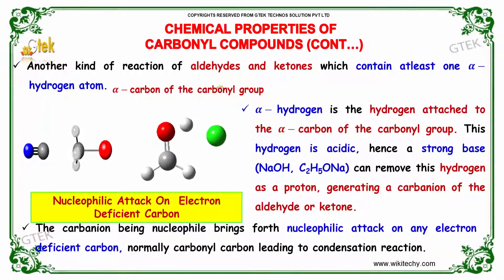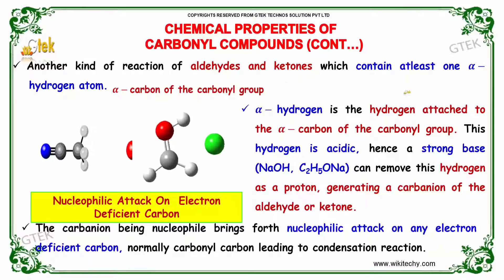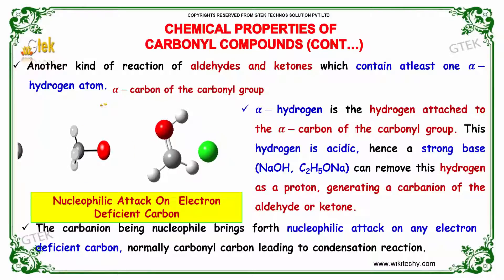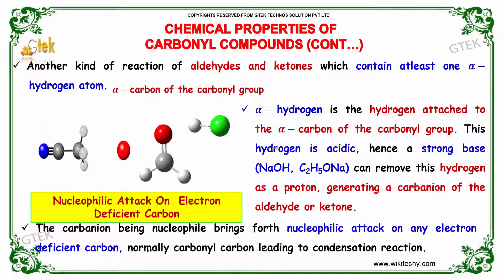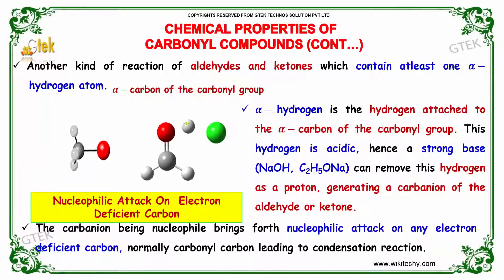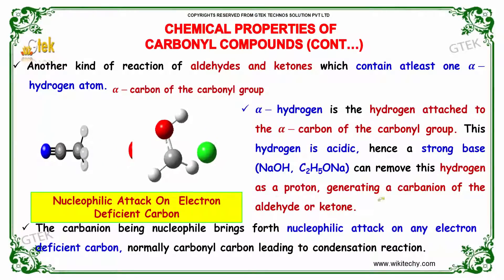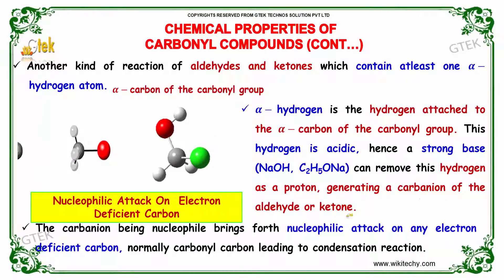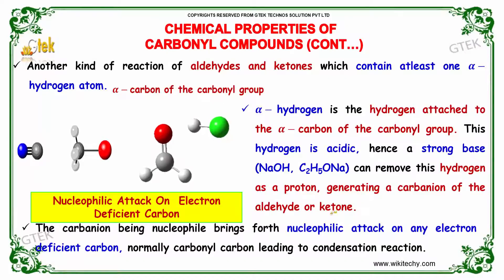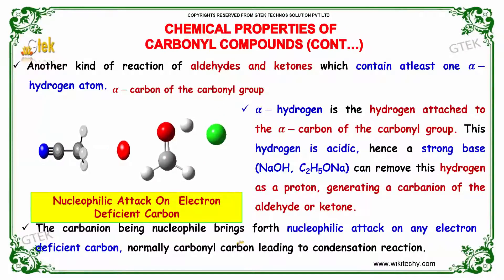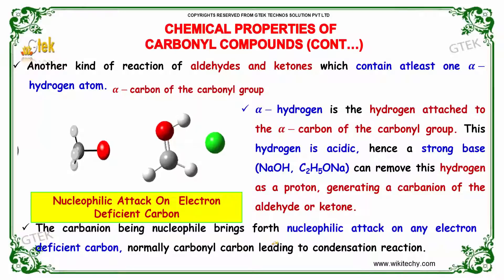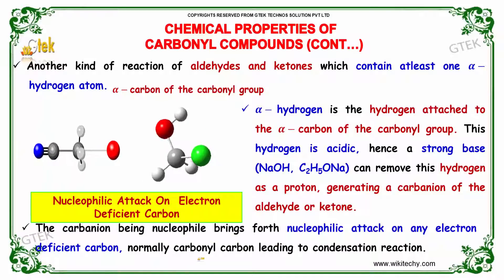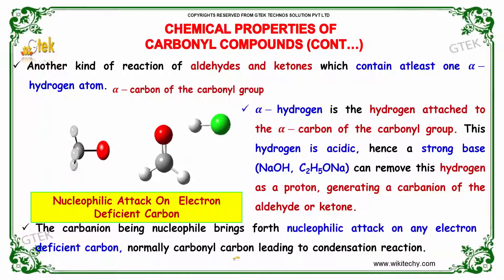Another kind of reaction involves aldehydes and ketones which contain at least one alpha hydrogen. Alpha hydrogen is a hydrogen attached to the alpha carbon of the carbonyl group. This hydrogen is acidic, hence a strong base can remove it as a proton, generating a carbanion of the aldehyde or ketone. The carbanion, being nucleophilic, brings about nucleophilic attack on an electron-deficient carbonyl carbon, leading to condensation reactions.